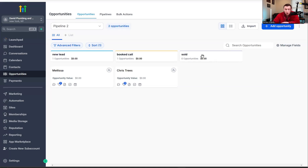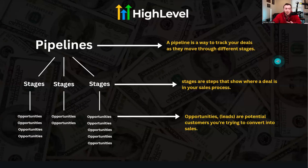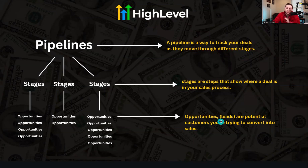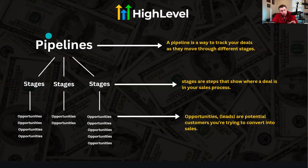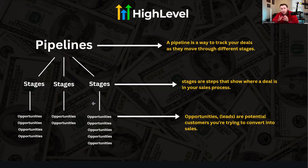Then last but not least, we have opportunities, which are also leads, prospects, whatever you want to call them. Opportunities are potential customers you're trying to convert into sales, and every stage has multiple opportunities. The hierarchy is: it starts with pipelines, each pipeline has multiple stages, and then each stage has multiple opportunities.